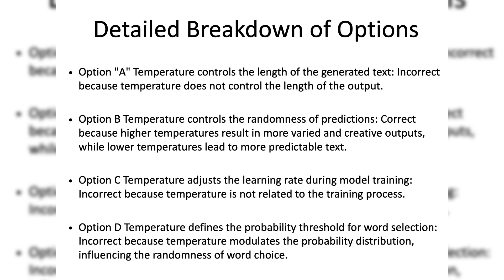Option A: temperature controls the length of the generated text. This is incorrect because temperature does not control the length of the output. The length of the text is typically managed by other parameters like the maximum token limit.